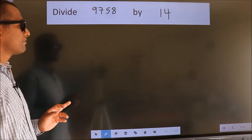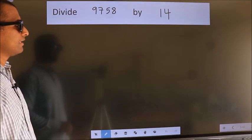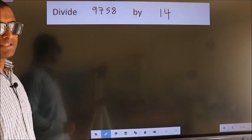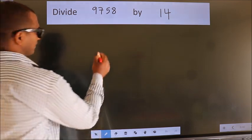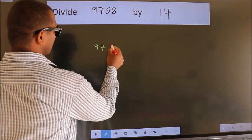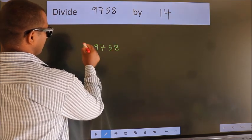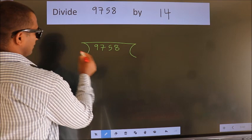Divide 9758 by 14. To do this division, we should frame it in this way. 9758 here, 14 here.